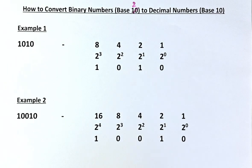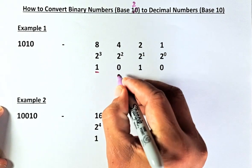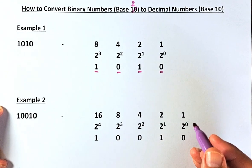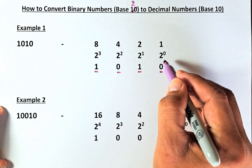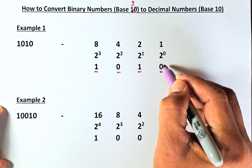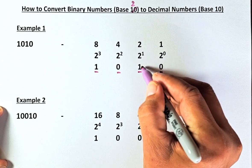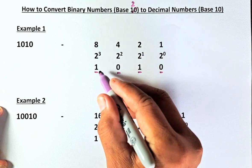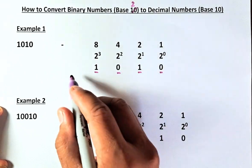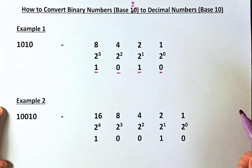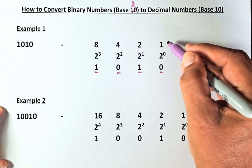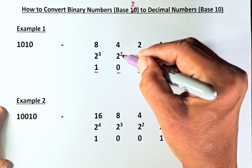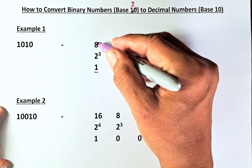So we are going to write 1, 0, 1, 0. The next step: because it is a binary number, the last digit 0 is going to be 2 to the power 0, the next is 2 power 1, the next is 2 power 2, and the last number is 2 power 3. There is no other number so we stop at 2 power 3. So we know that 2 power 0 is 1, 2 power 1 is 2, 2 power 2 is 4, and 2 power 3 is 8.